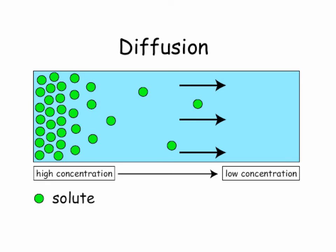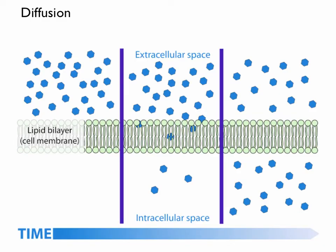Diffusion is the movement of particles from a high concentration to a low concentration. When we look at diffusion occurring across the cell membrane, we see a high concentration of particles — the blue pentagons — on the outside of the cell. Those will simply move through spaces between phospholipids into the intracellular space. Over time, the concentration of those particles becomes even inside and outside of the cell with simple diffusion.